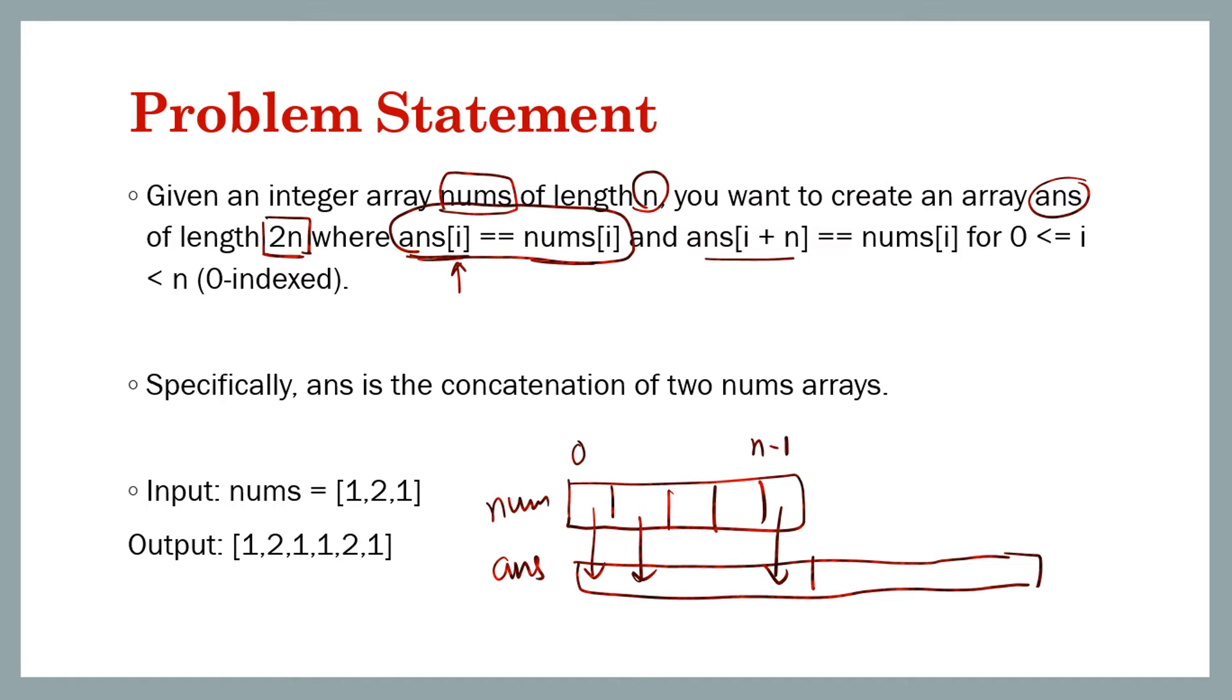So i ranges from 0 to n minus 1, so when i is 1 we have the n plus 1th index. This is n plus 1 and all the way up to n plus n minus 1.